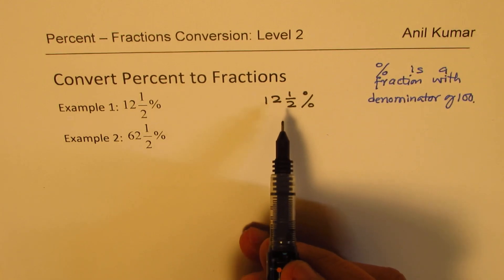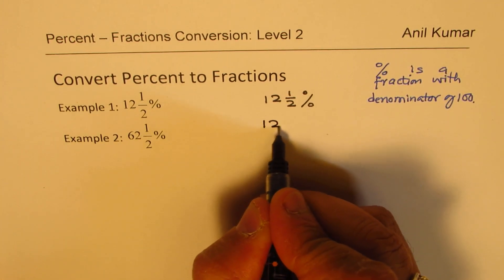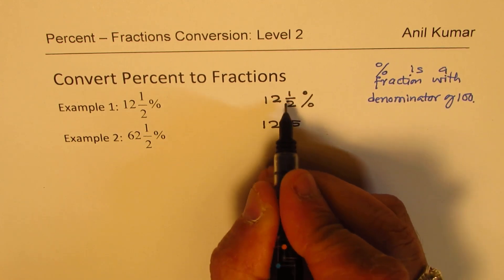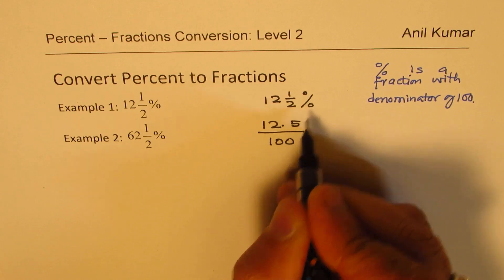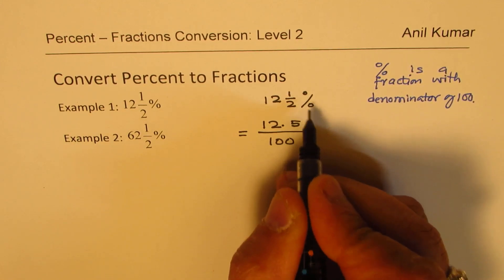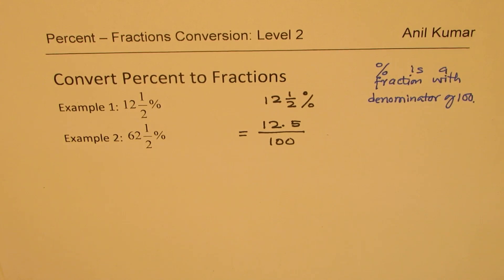So 12.5, I could write this 12 and a half, I could write this as 12.5, that is for half, over 100. So I have dropped this percent symbol and instead of percent, I have written 1 over 100. Perfect. So divided by 100.